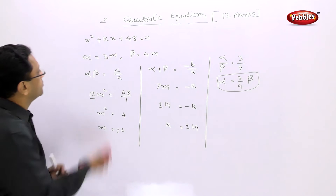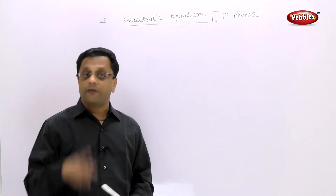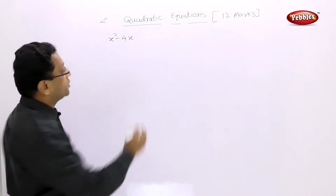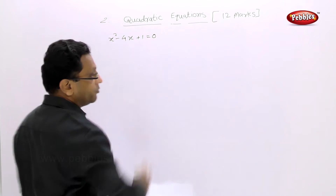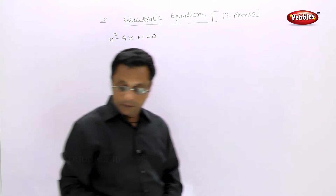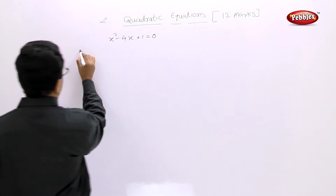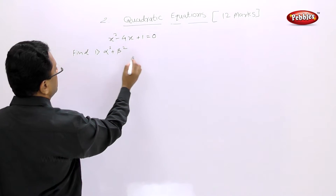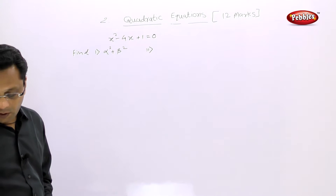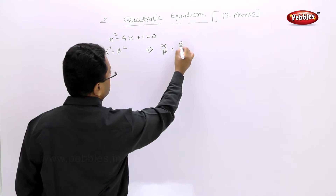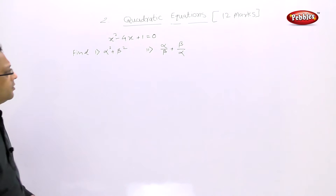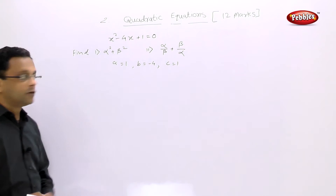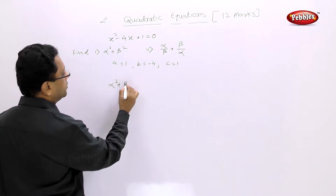Let us see another example. If alpha and beta are roots of x² - 4x + 1 = 0, we need to find: first, alpha² + beta², and second, alpha/beta + beta/alpha. Here a = 1, b = -4, and c = 1. We know alpha + beta = -b/a = 4 and alpha × beta = c/a = 1.